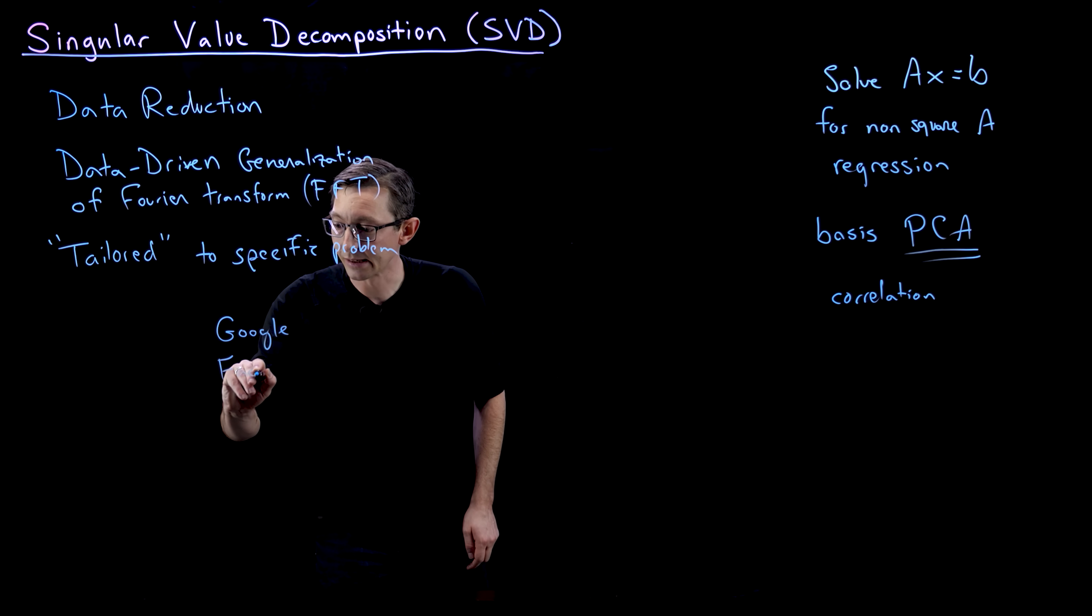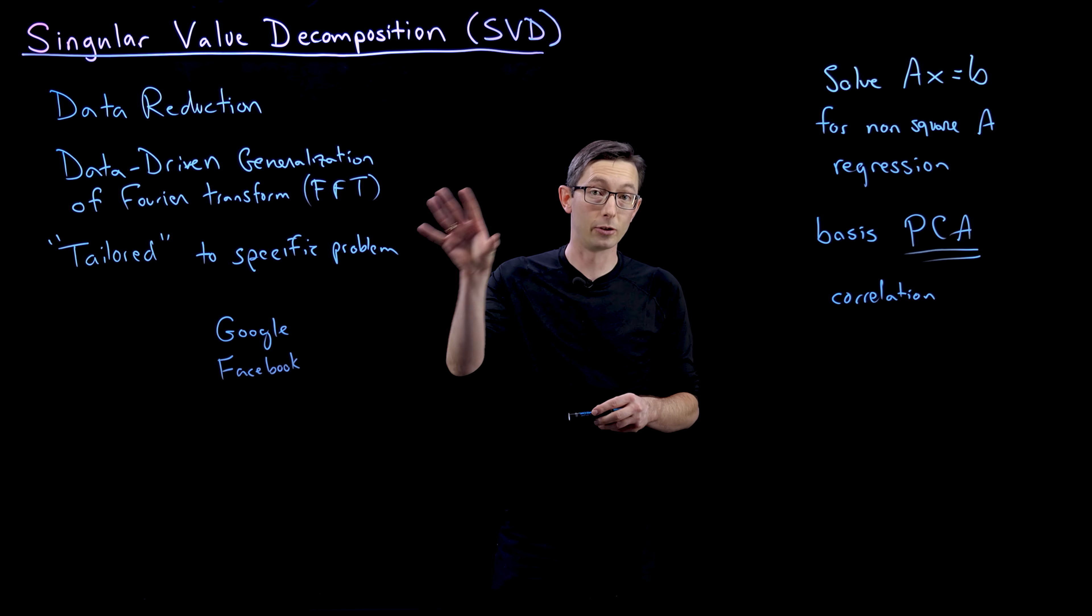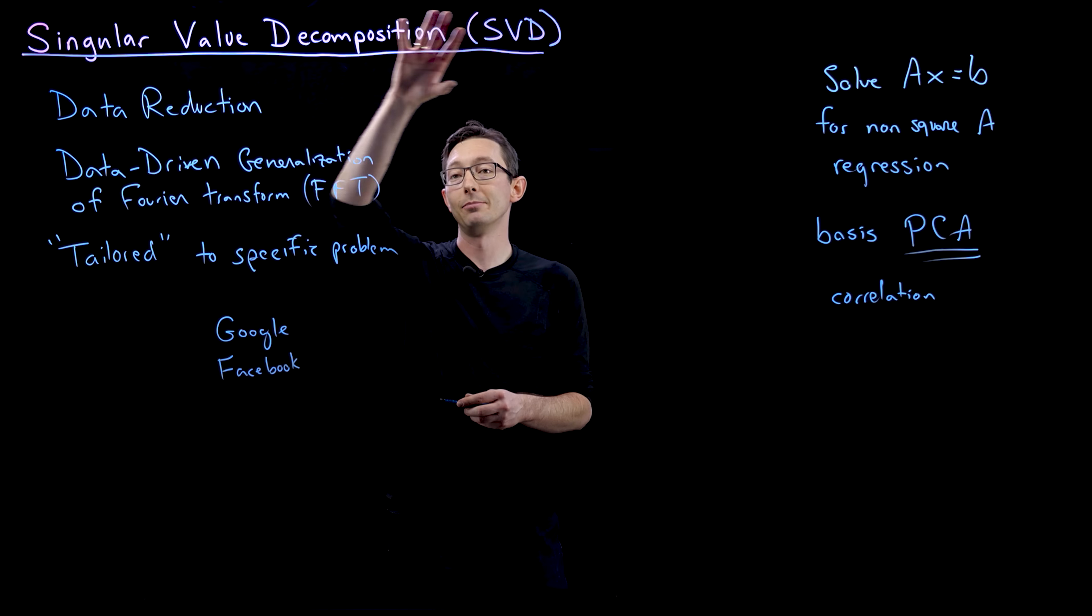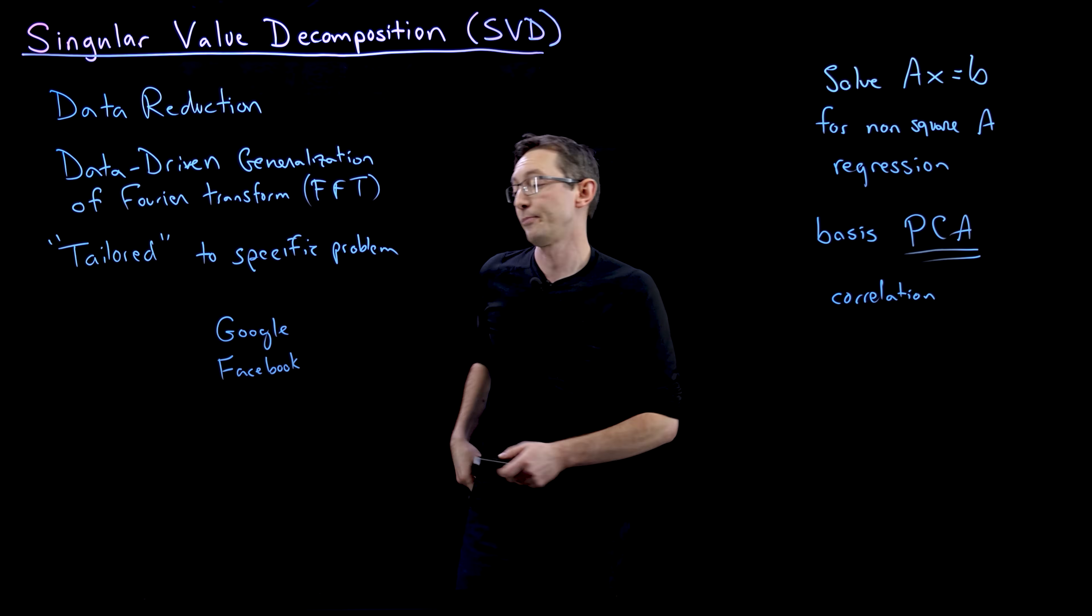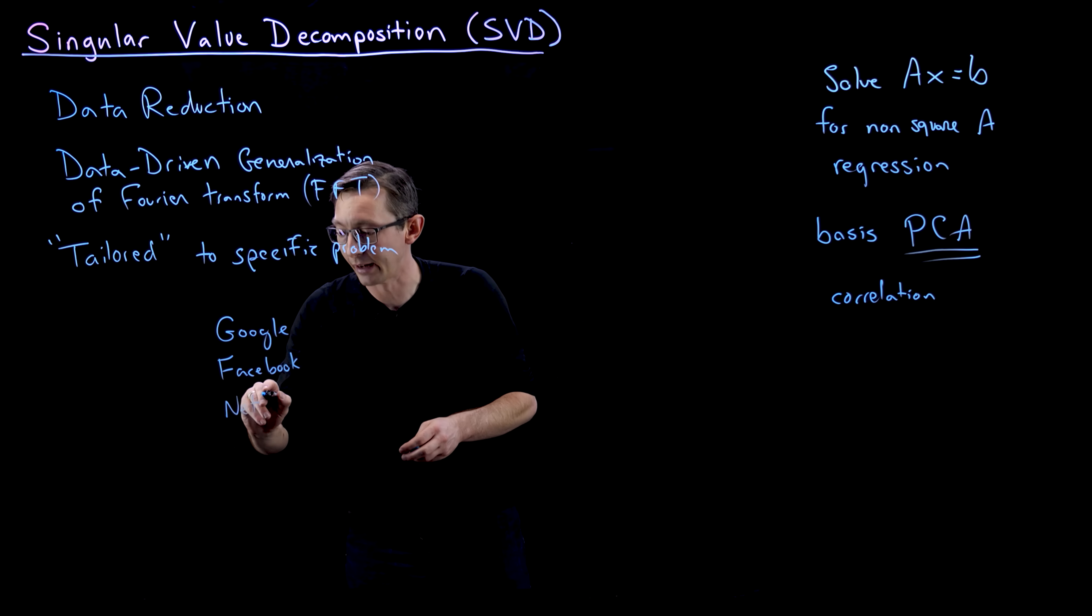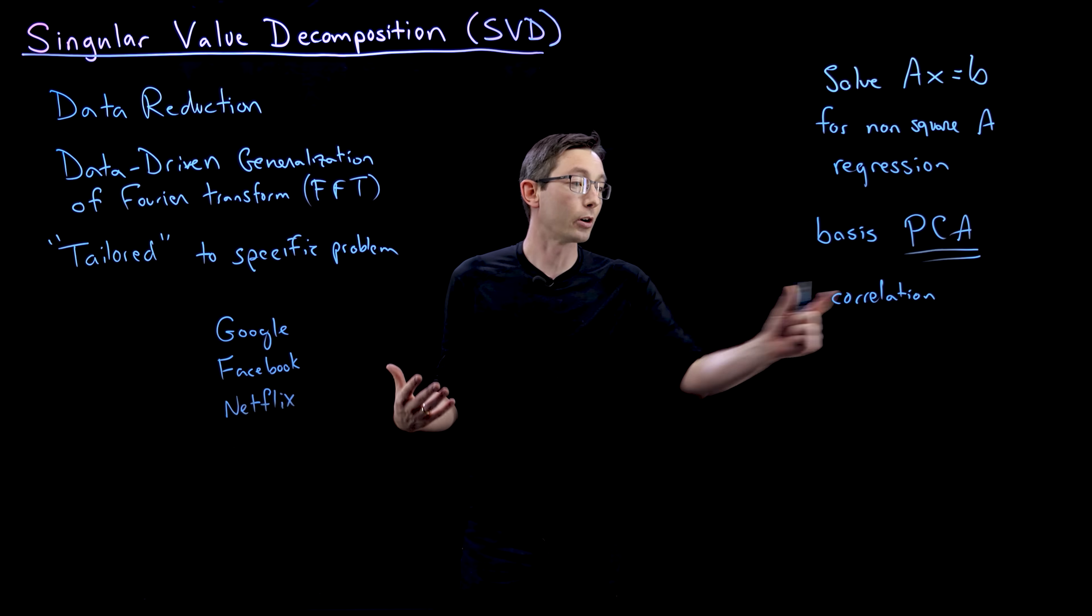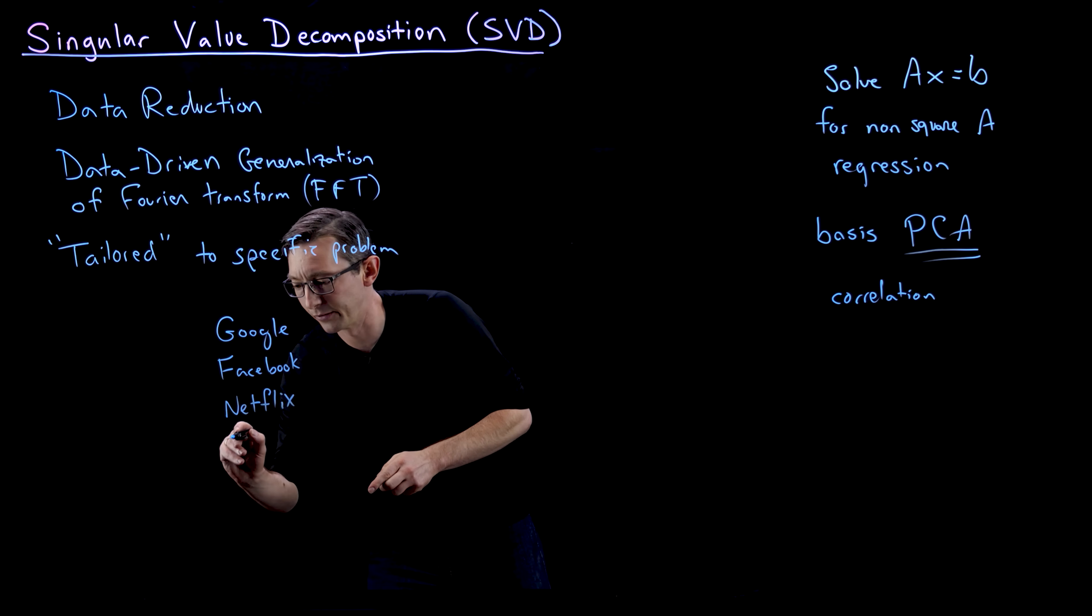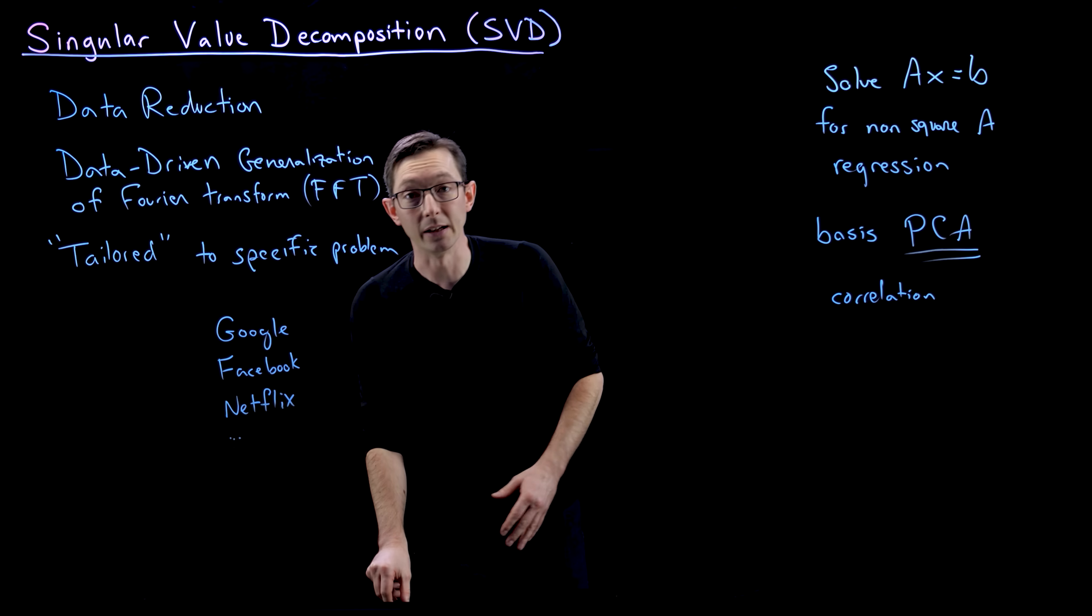It's the basis of many facial recognition algorithms to tell which person is who from an image. So you could again build these singular value decomposition representations of human faces. It's also used in recommender systems like Amazon and Netflix, where it will essentially build correlation patterns of what types of people like what types of movies. And this is just a very, very, very brief list of all of the examples of the SVD in industry.